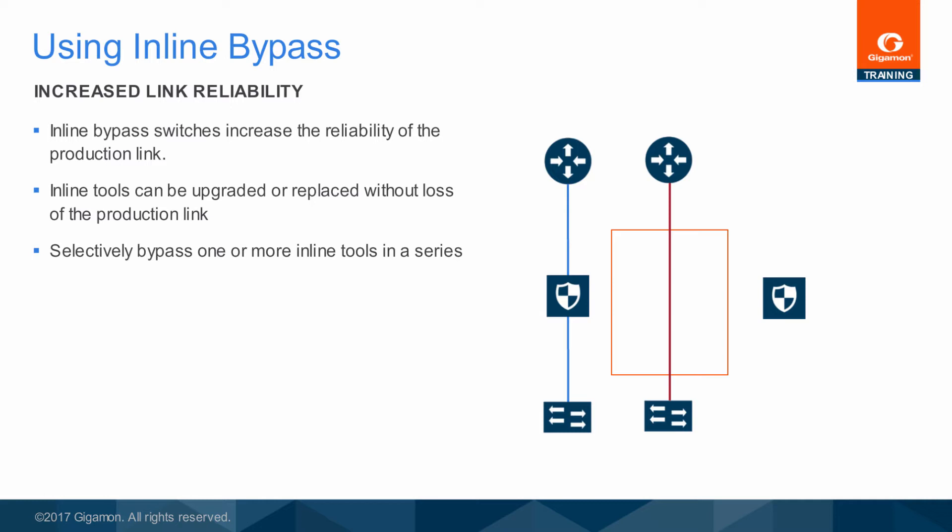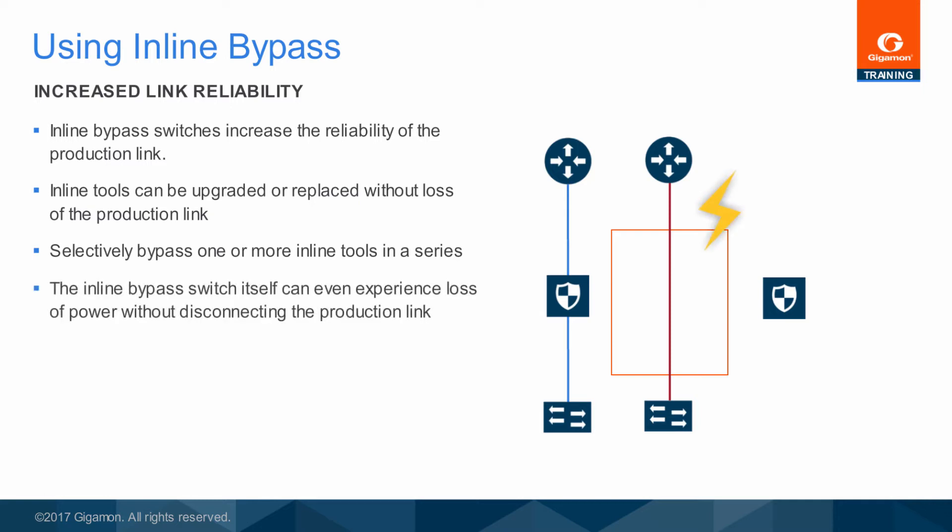When a series of tools is present without an inline bypass switch, loss of any one tool causes the entire chain to go down. With an inline bypass switch, the production link and all of the other inline tools can remain operational in the presence of individual tool failures or removal. Because of fail-safe protections, even loss of power to the inline bypass switch itself will not bring down the production link.